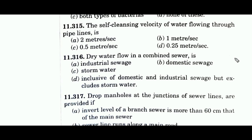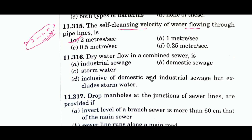Question 315 asks about self-cleansing velocity in pipeline flow. Self-cleansing velocity is defined for sewer lines to prevent suspended particles from sinking and causing silting. In pipeline flow, the water is already clear with no suspended particles. The minimum velocity in pipelines is generally 0.9 to 1.5 meters per second. The answer is option A.